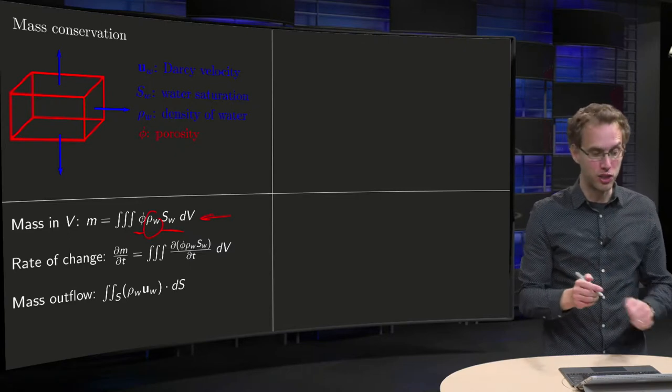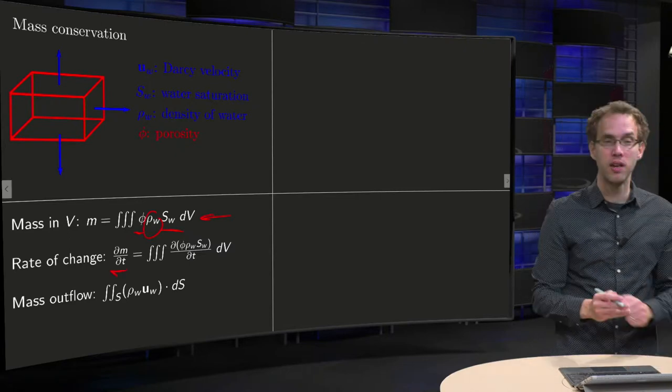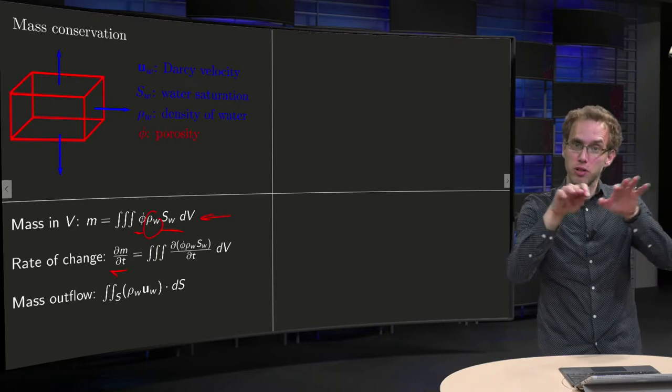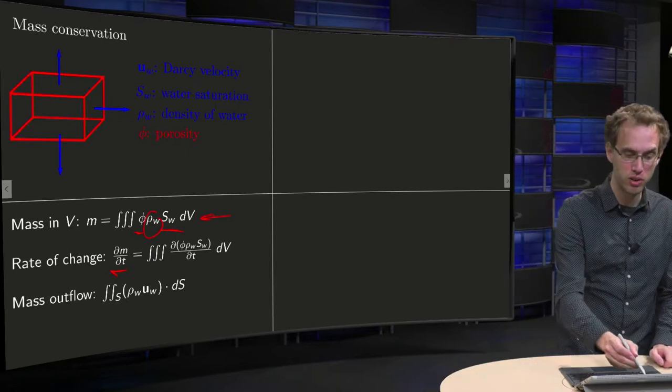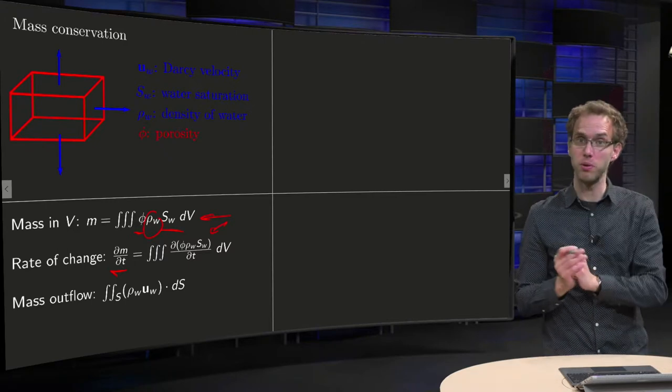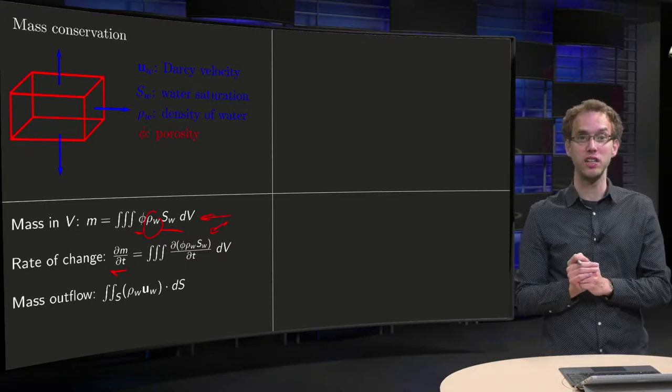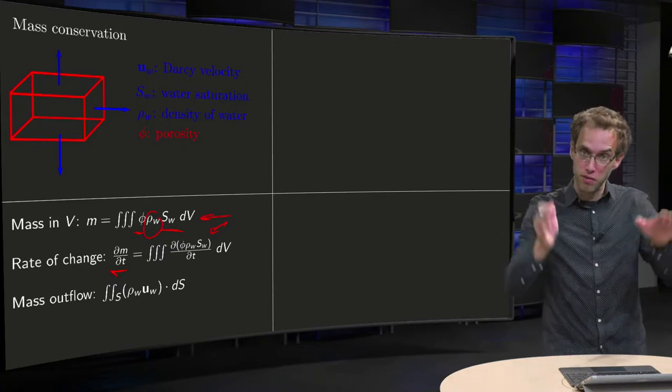Now what's the rate of change of this mass, dM/dt? We take a constant volume V, so that means you can take the d/dt inside the integral, so you just get the d/dt of φ times ρ times SW. That's the rate of change of the mass inside our V.